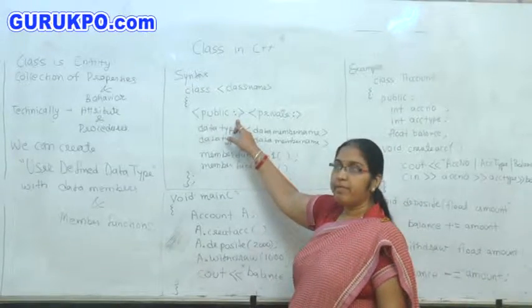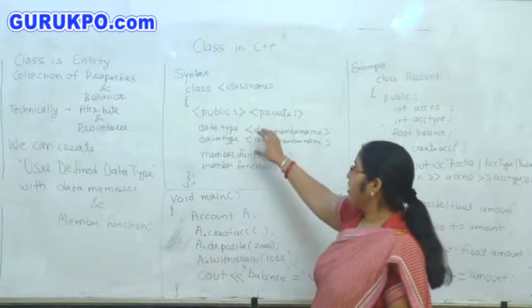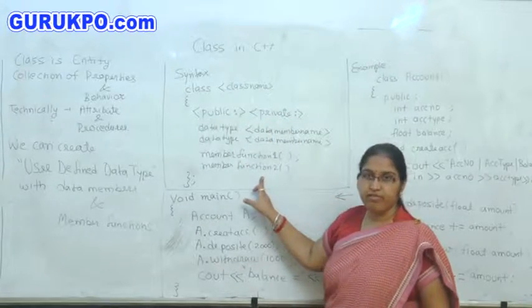Then, we should place here the public or private. It is a scope specifier. Then, we should place some data members and member functions.